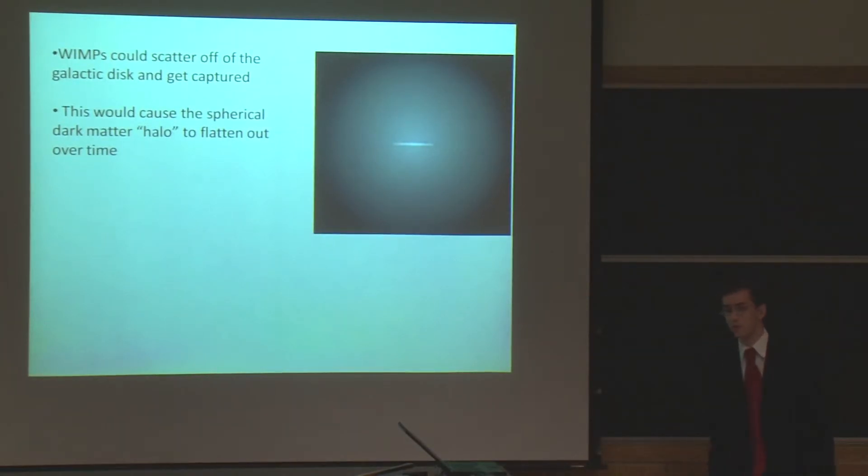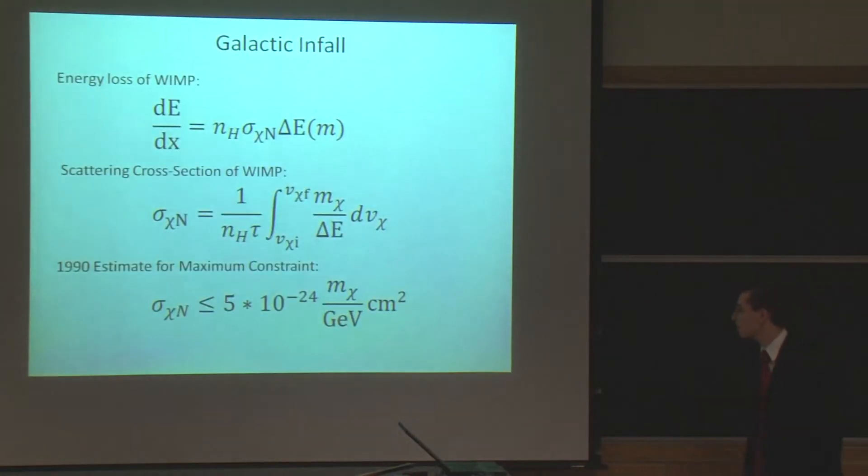That's a constraint that was first done 20 years ago, in a rather back-of-the-envelope manner, by Professor Starkman, Gould, Esmailzadeh, and Dimopoulos, and this is the result they got. Now, they had to take an approximation where the WIMP mass is a lot bigger than a proton, and they frankly were rather sloppy about it. The basic equation we're working with relates the rate at which a WIMP is losing energy to the cross-section and the amount of energy it loses per scatter.